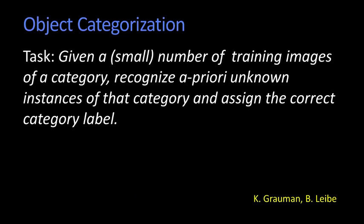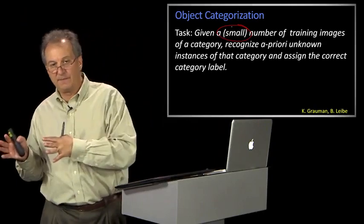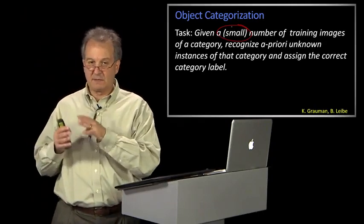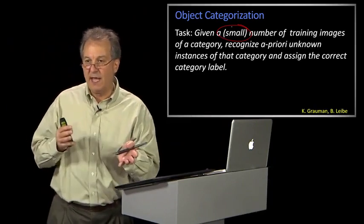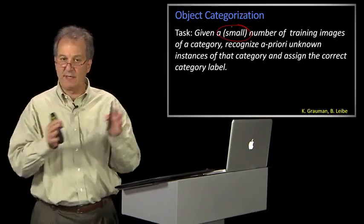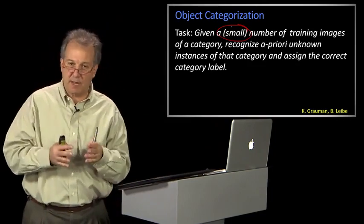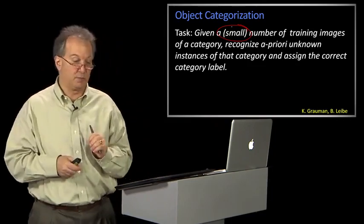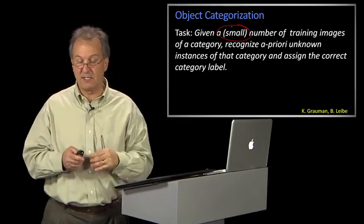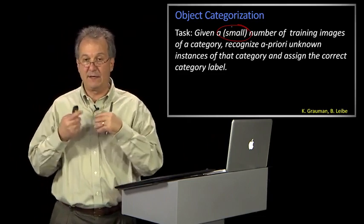So object categorization can be described in a variety of ways. This was a slide from Kristen and Bernd Lieber, and then I changed it a little bit. Generically, it's kind of like this. Given some number of training examples, training images of a category, recognize some unknown instances of that category and assign the correct label. Now, you'll notice that I put down small in parentheses. You know, right here it says small. These days, not a lot of work is done on the small number. That is, typically we have lots of large examples, and there's a question about how methods that go from taking large data could then use small data. To me, that's a slightly more interesting problem. But we'll leave the small as being sort of optional at this point. But the basic idea is that I give you a set of these things and some sort of labels, and you want to give me back the correct label.